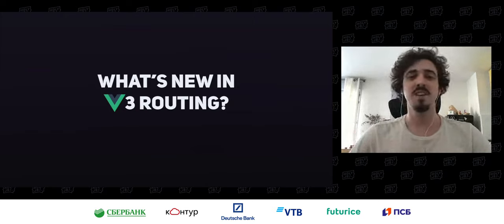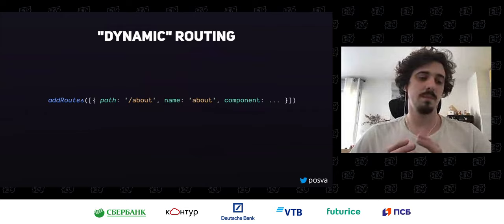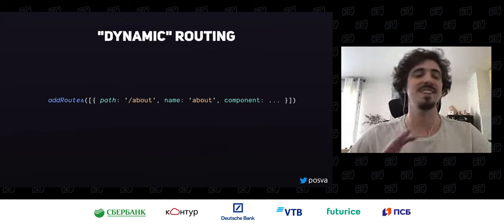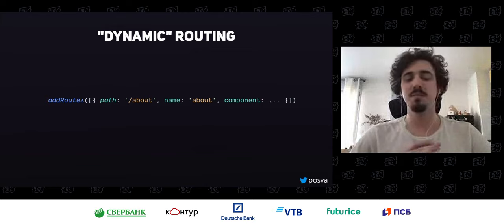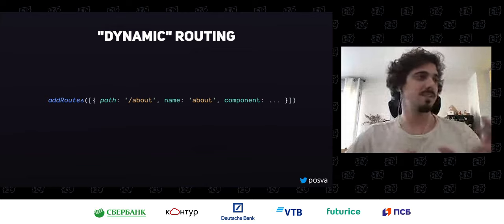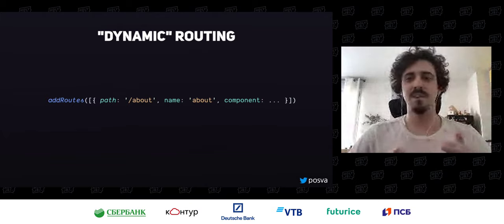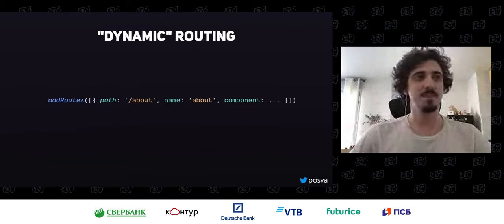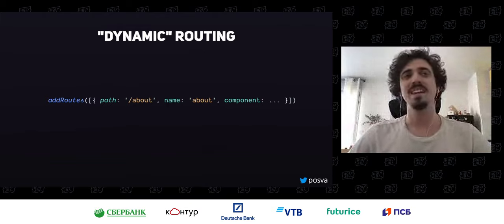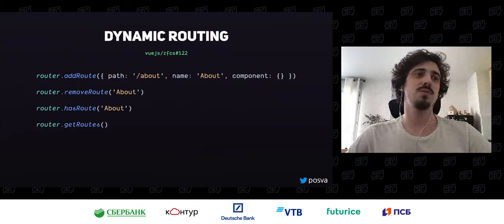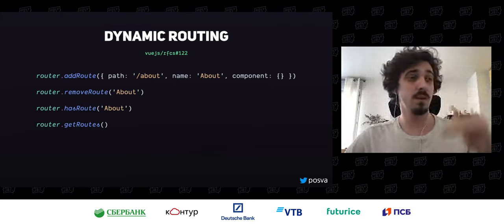With Vue 3 coming, that's a different story. We can introduce some breaking changes to bring all the improvements we've been waiting for. Today I'm going to talk about what's new in Vue 3 routing — that will be version 4 of Vue Router. Note that it's a bit confusing: version 3 of Vue Router is for Vue 2. The first most-wanted feature is dynamic routing. In the current version we can only add routes, we cannot remove or replace them.